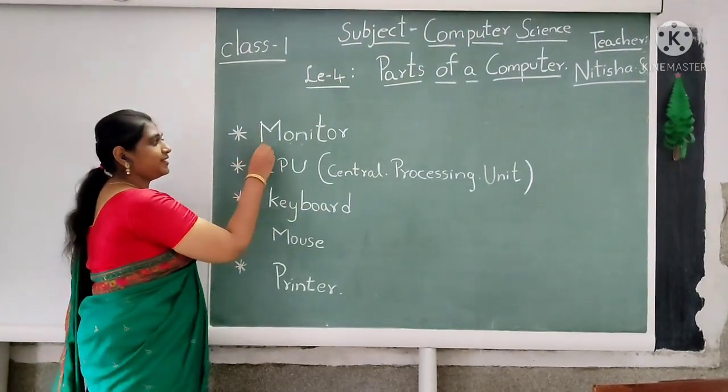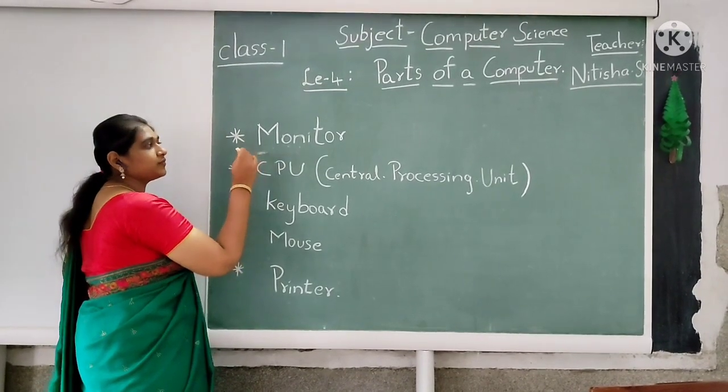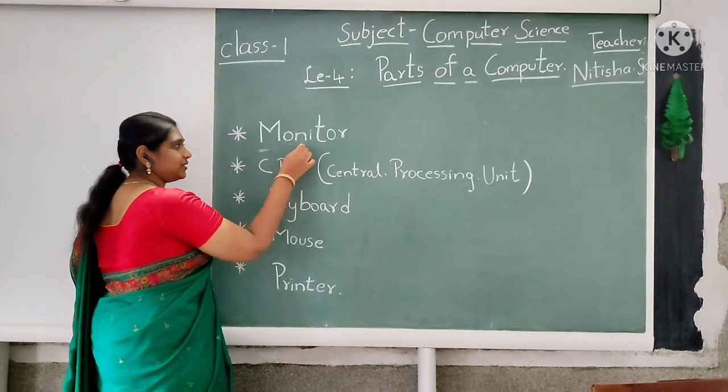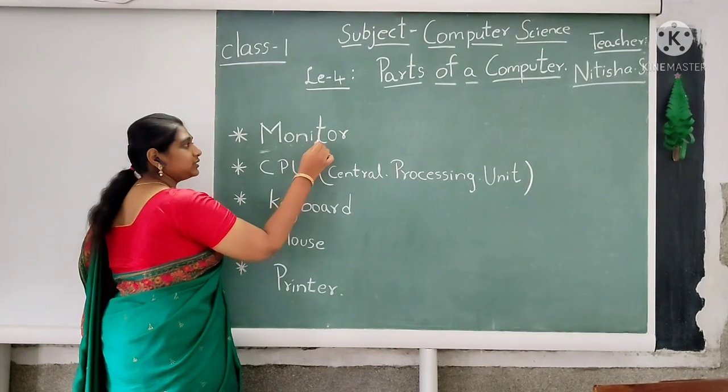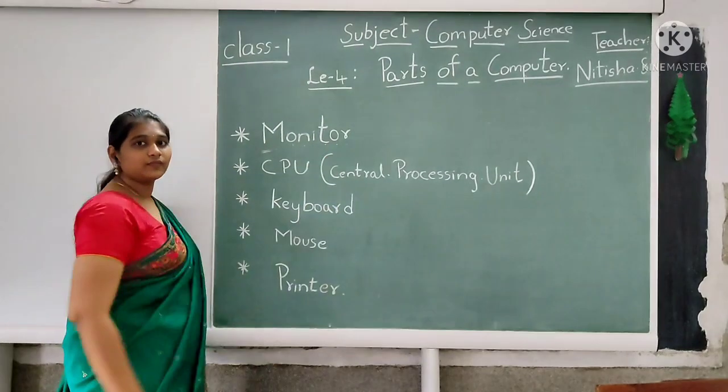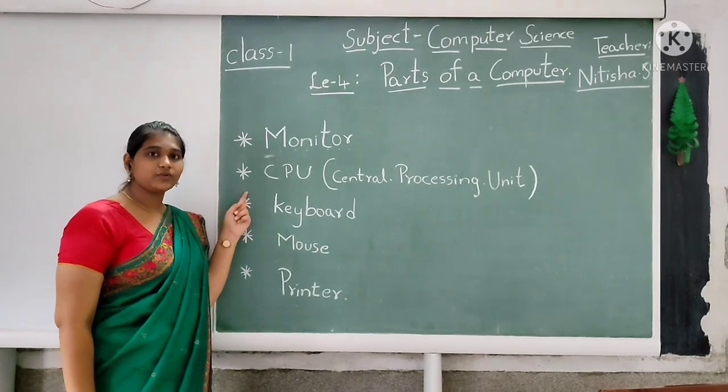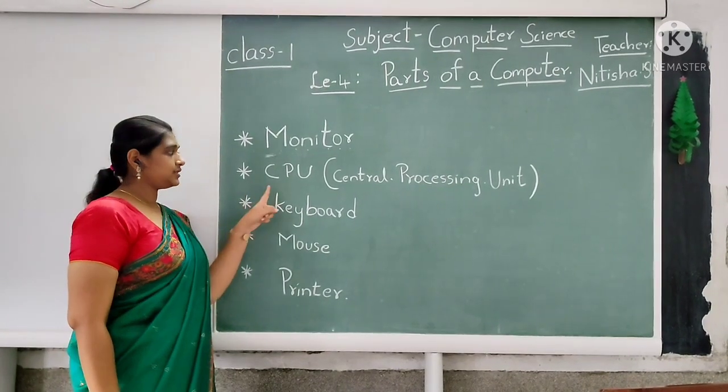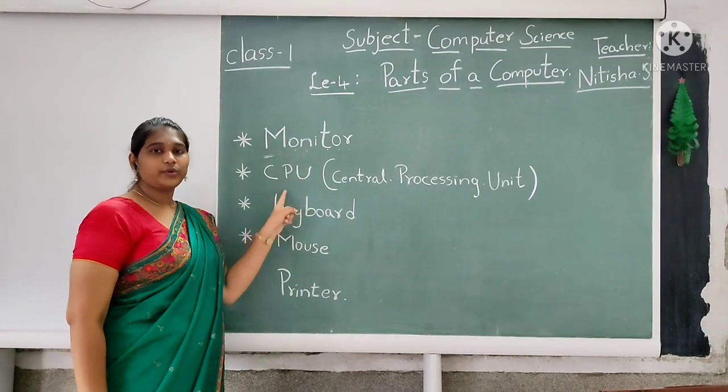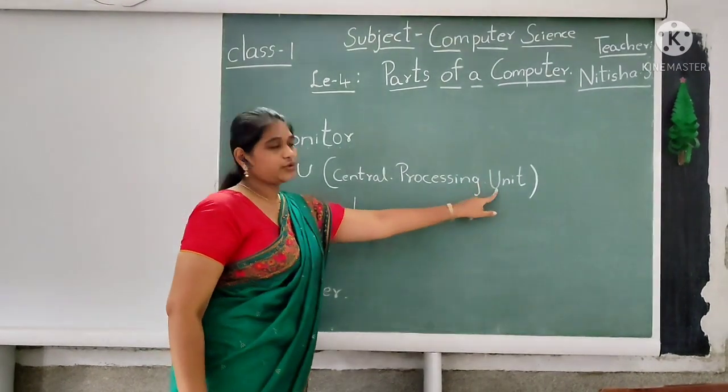The first one is a monitor. What is the spelling of a monitor children? The spelling of a monitor is M-O-N-I-T-O-R. Monitor. And then the CPU. What is the spelling of a CPU children? C-P-U. What is the full form of the CPU children? Central processing unit.